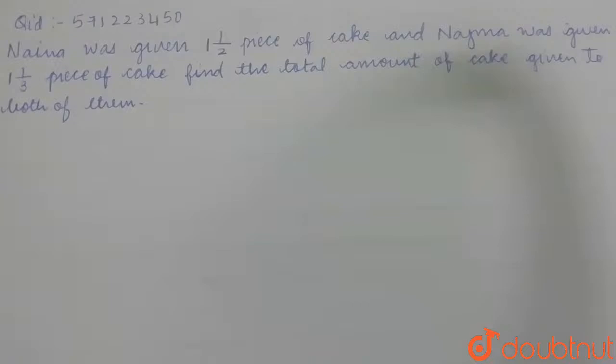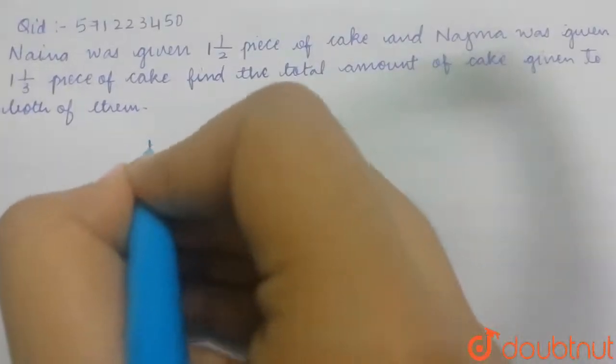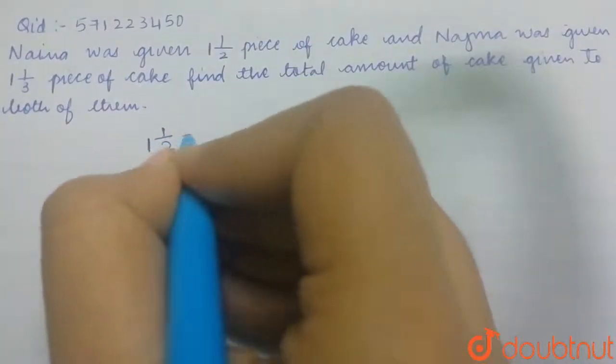And Najima was given 1 1/3 piece of cake. Find the total amount of cake given to both of them. Now let us first consider this piece of cake, 1 1/2.